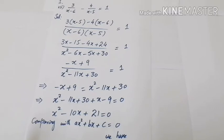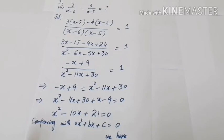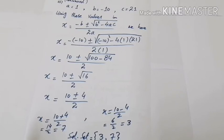Shifting the left-hand terms to the right to keep the x² coefficient positive, we get x² − 11x + 30 + x − 9 = 0, which simplifies to x² − 10x + 21 = 0. This is now in standard form. Comparing with ax² + bx + c = 0: a = 1, b = −10, c = 21.